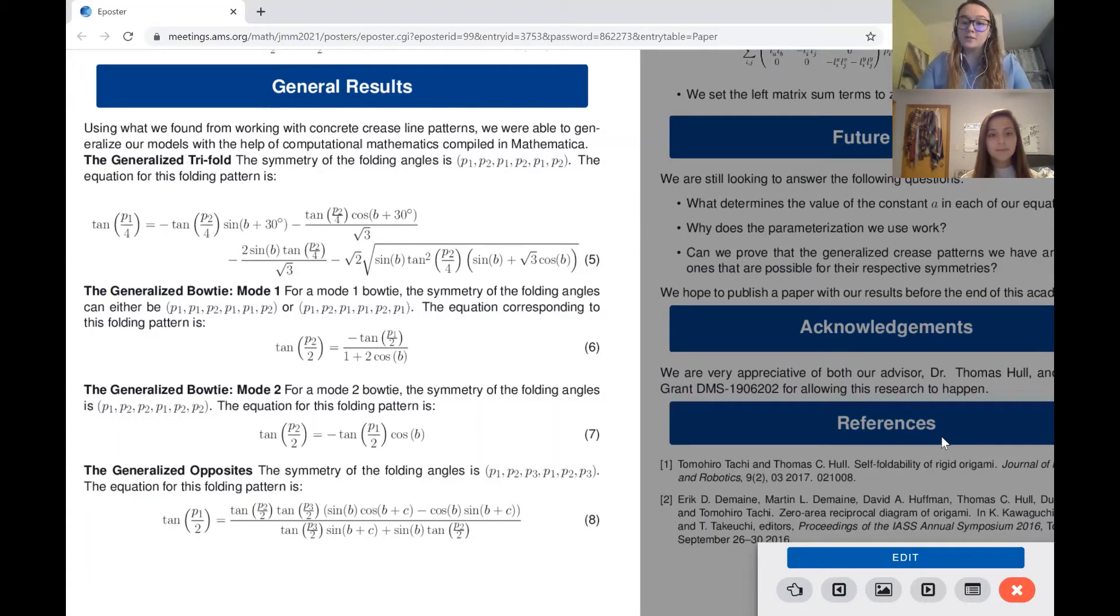We also found two equations for the generalized bow tie, specifically mode one and two, captured in equations six and seven respectively. These both correspond to the center crease pattern in our folding pattern section. Clearly we see that both of these show that there is again an algebraic relationship between p1 and p2 based on angle b.